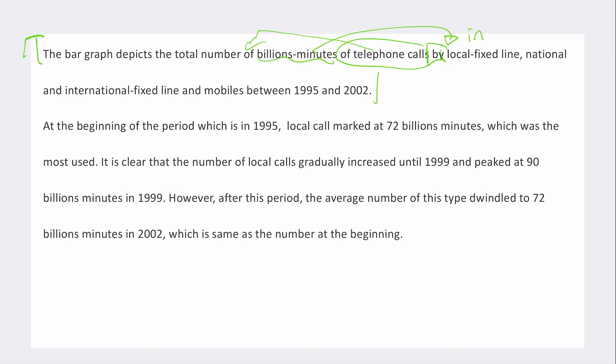The bar graph depicts the total number of telephone calls by billions of minutes in fixed line, national and international fixed line and mobiles. You could say over a seven-year period. Maybe you could paraphrase that a little bit if you wanted to. So it's just the order that the information has been given in that's a little bit strange.